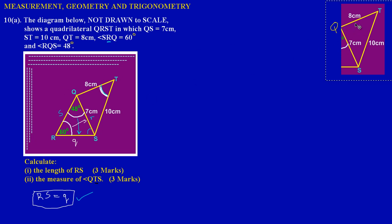I want you to be focusing on this triangle here — triangle QTS. Simply put, when you are given three sides, notice they gave us the length of all three sides in this triangle, and here they're asking us to find an angle, which is the angle located at point T.